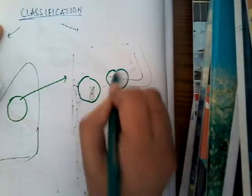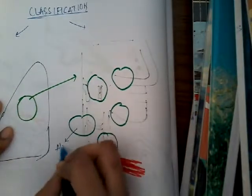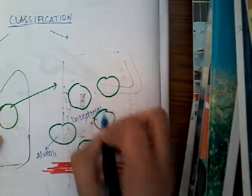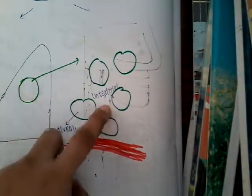In the lung we have two things. If you magnify this part you will have different alveoli. You will have alveoli — this is the alveoli. And you will also have the blood vessel. This is the interstitium. The space between the alveoli is the interstitial space.